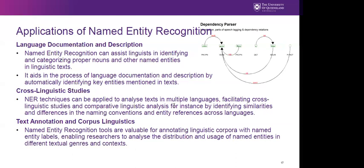NER is also a type of text annotation used in corpus linguistics. Named entity recognition tools can annotate linguistic corpora with named entity labels, enabling researchers to analyze the distribution and usage of named entities across different textual genres or contexts. For example, you could search a corpus for all documents mentioning Donald Trump and build a targeted subcorpus from those results.